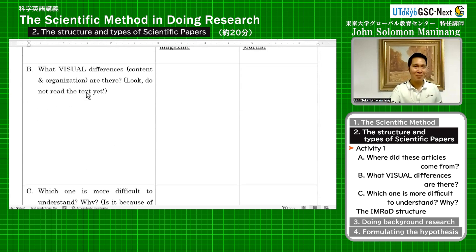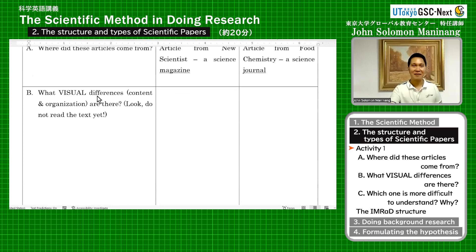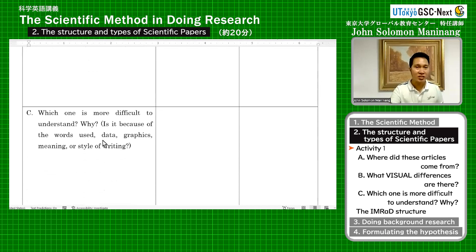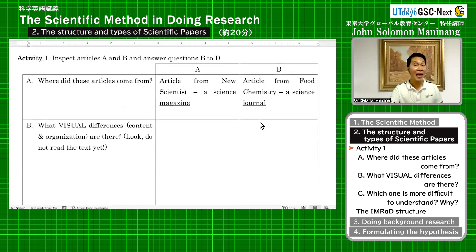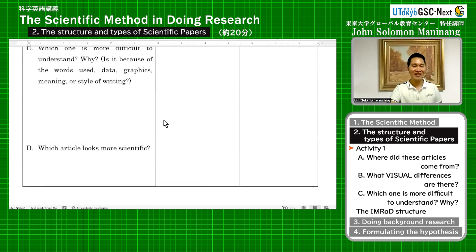For question B, do not read yet. Just look at the paper. What is the difference between article A and article B? And then when you reach question C, try to read the first sentence of article A, and then the first sentence of the abstract of article B, and try to talk to your partner. Is it difficult? Which one is more difficult? Why is it difficult? And finally, answer which article looks more scientific.